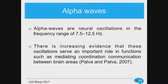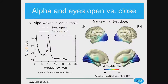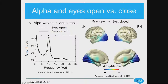Alpha waves are neural oscillations in the frequency range of 8 to 12 hertz. From other research, we know there is evidence these oscillations serve an important role in functions like communication between brain areas — we're talking about connectivity between different areas. For instance, when we compare eyes open with eyes closed, you can see that with eyes closed there is a huge alpha wave, and when you open the eyes the alpha waves diminish in amplitude.